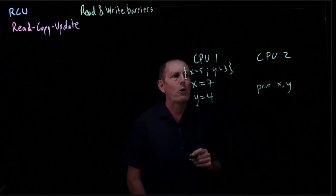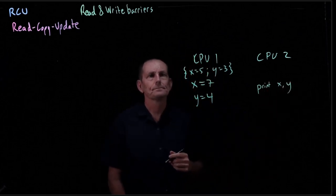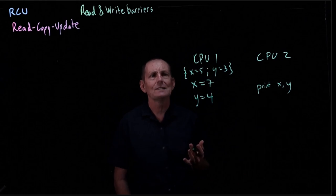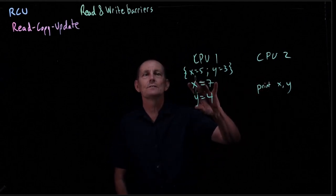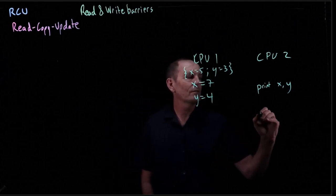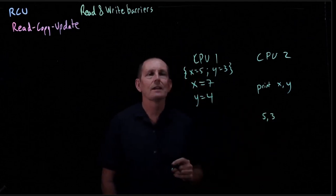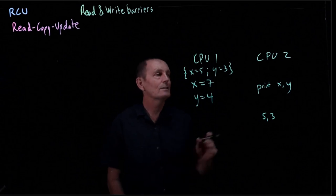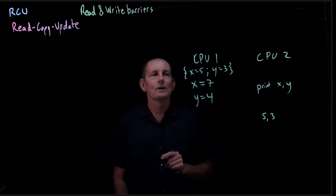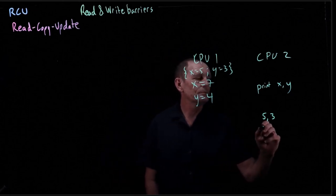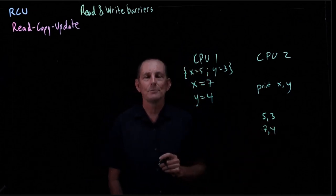on CPU 2, if we go ahead and print x and y, what might print out? As you'd imagine, the print might happen before the assignments to x and y. So we might get 5 and 3. That's not unexpected. As well, the print might happen after the assignments to x and y, and so we might get 7 and 4.